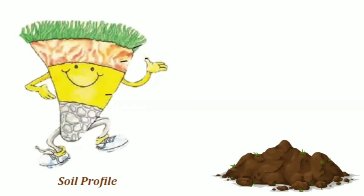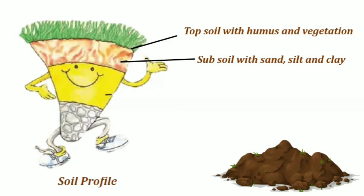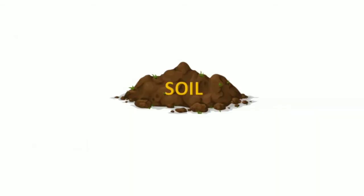Now let us look at the soil profile. This figure is taken from your NCERT textbook. The topmost or first layer is made up of topsoil with humus and vegetation. The second layer is the subsoil with sand, silt, and clay. The third layer is made up of weathered rock material, and lastly, the fourth layer is the parent rock.